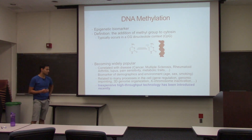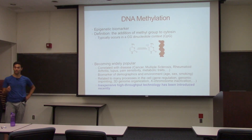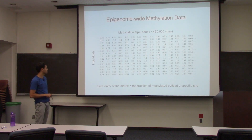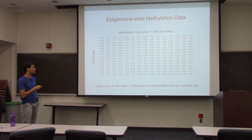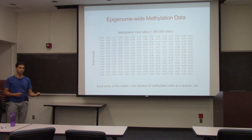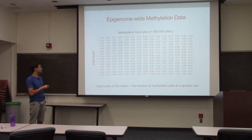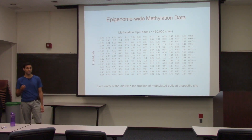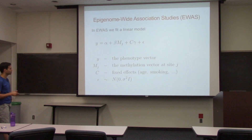Maybe most importantly, in the last few years, we have a relatively inexpensive high-throughput technology that allows us to produce large-scale methylation data. The data looks like a very large matrix of individuals by site — typically half a million sites. Since methylation, if you look at a specific cell, is binary — either methylated or unmethylated — you'd have zeros and ones per cell. But since specimens contain multiple cells, each matrix entry is the fraction of methylated cells out of the total number of cells. So that's the input.